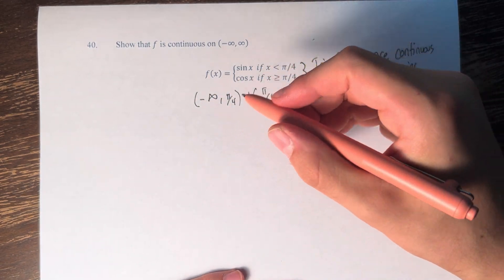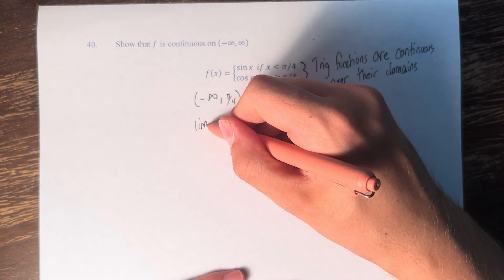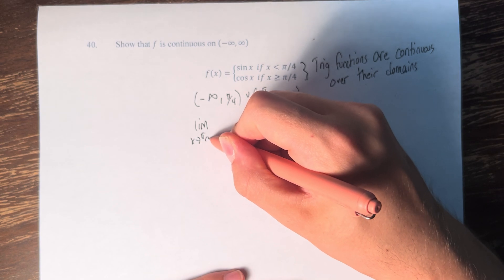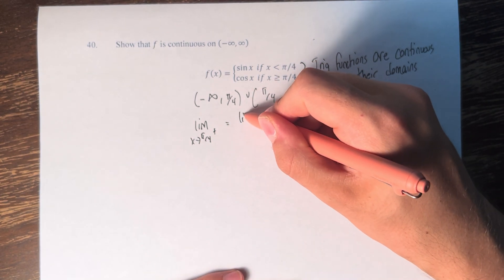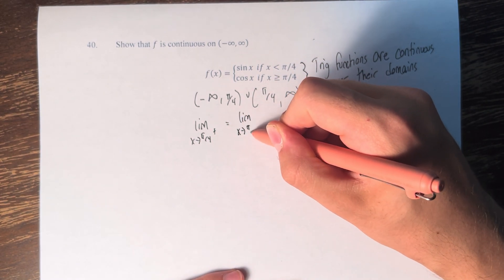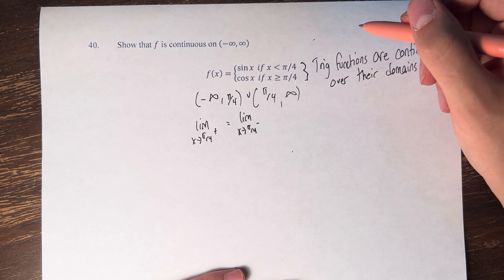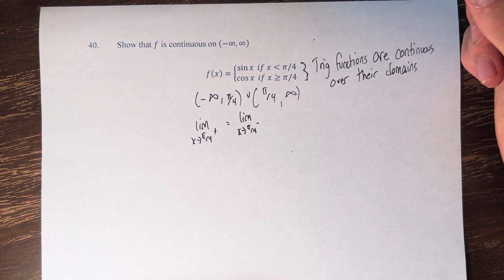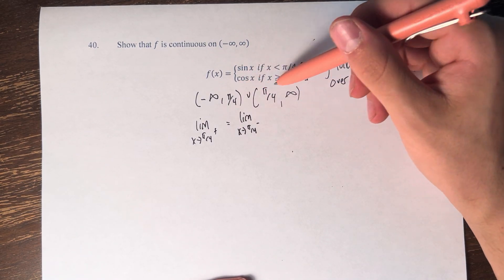So we are basically testing if the limit as x approaches pi over 4 from the right equals the limit as x approaches pi over 4 from the left. And basically what that means is, is sine of pi over 4 equal to cosine of pi over 4?